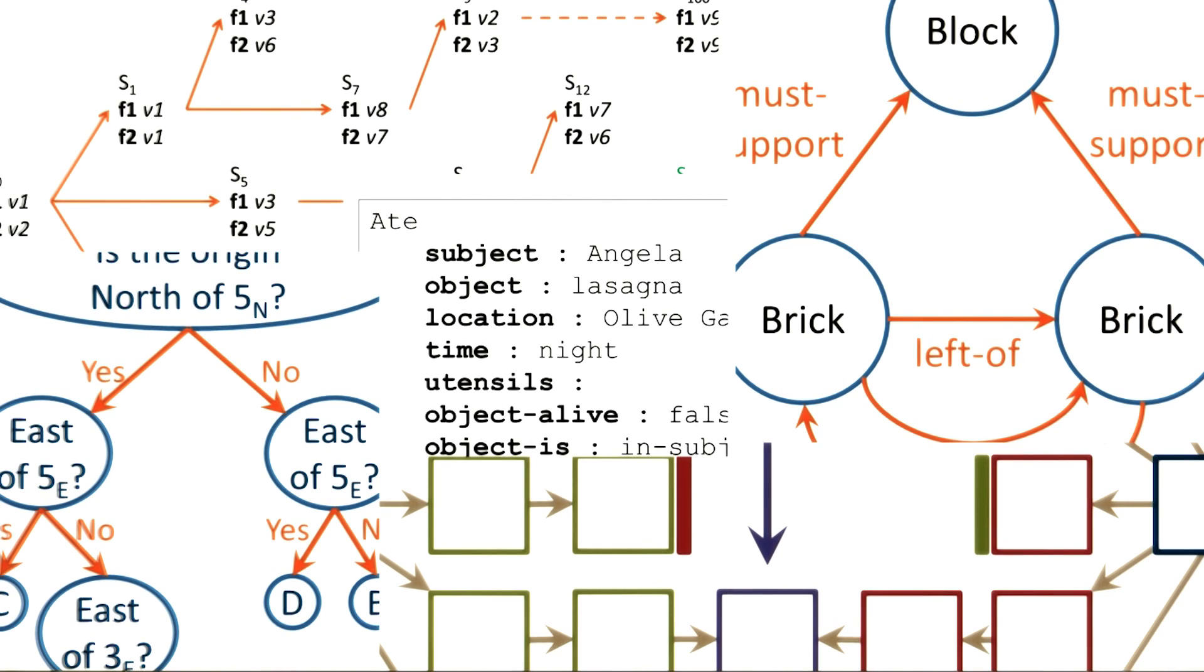Let us not worry too much about all the representations on this collage right now. We'll get to them later. The idea here is to simply show that AI has developed not one, but many knowledge representations. Each representation has its own affordances and its own constraints.